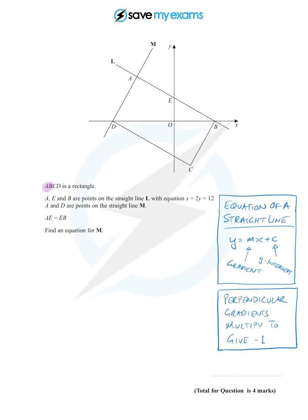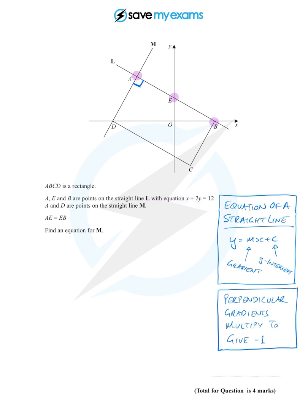We are given a rectangle ABCD. Being a rectangle, that means we have right angles in all the corners, specifically in that corner. Points A, E, and B are on a straight line L with equation x + 2y = 12. Points A and D are on straight line M. We're also told that AE equals BE — that distance is equal to that distance.